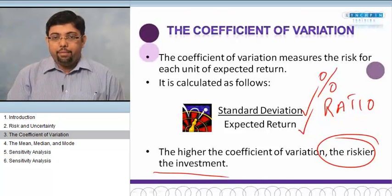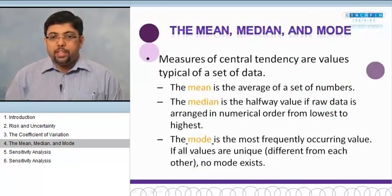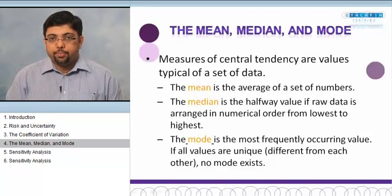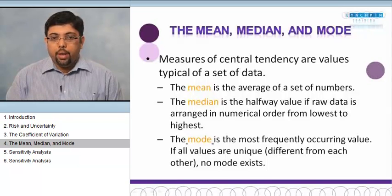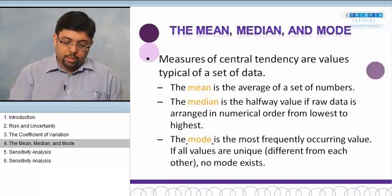Mean, median, and mode measure the central tendency or the values of a typical set of data. These are statistical measures used in the data. Mean is the average set of numbers. Median is the halfway value if raw data is arranged in numerical order. Mode is the most frequently occurring value.